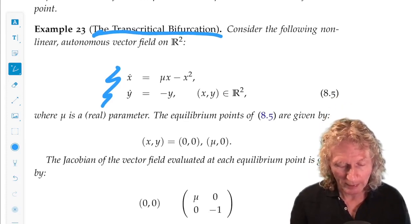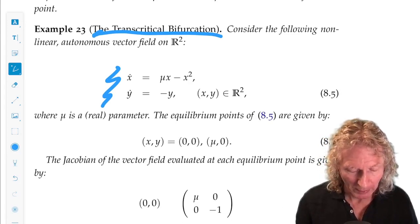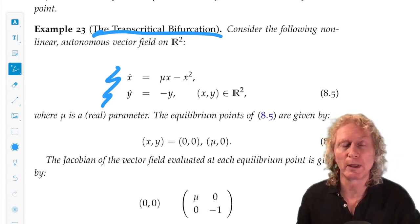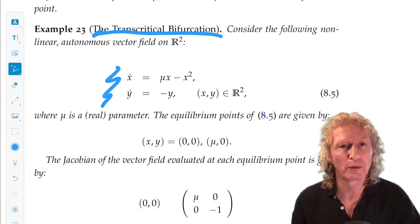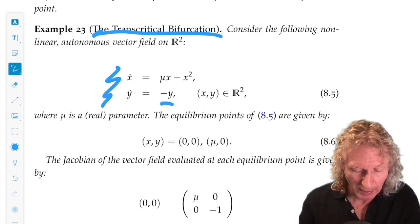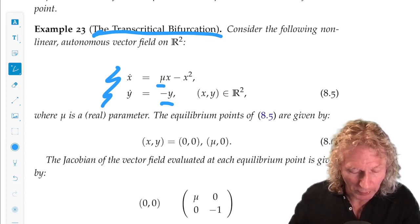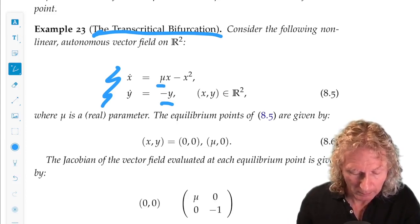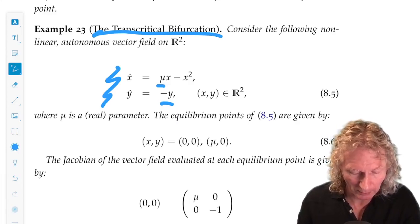So we can easily see what the equilibria are. The approach is the same. We look at the equilibria and study their linearized stability as a function of mu. So y has to be 0, and x factors out. So we have x equals 0, and mu equals x.